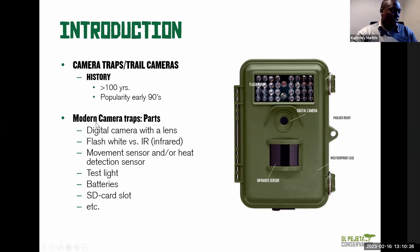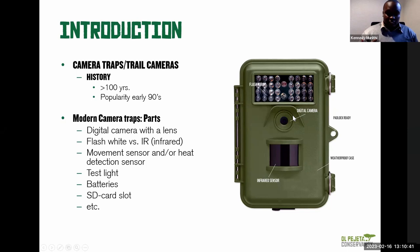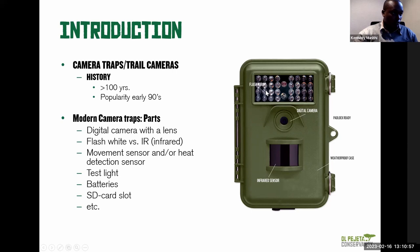Camera traps have been around for over 100 years, with their popularity rising in the early 90s. A camera trap — as you can see in the image on the right of the slide — has multiple parts. It has a digital camera and a flash array. The flash array can be either infrared or white, and is essentially similar to the flash of a normal camera. The camera works by motion trigger, and once that trigger is detected and the camera takes a photo, it uses that flash.